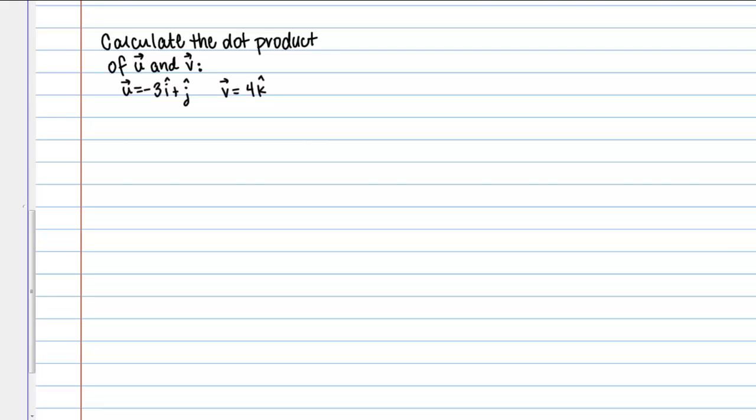To compute the dot product using the definition we've learned so far, to review that one more time, U dot V equals magnitude of U times magnitude of V times cosine of theta. That's what we're going to use here. To compute the dot product using this we're going to need to know the angle between these vectors.